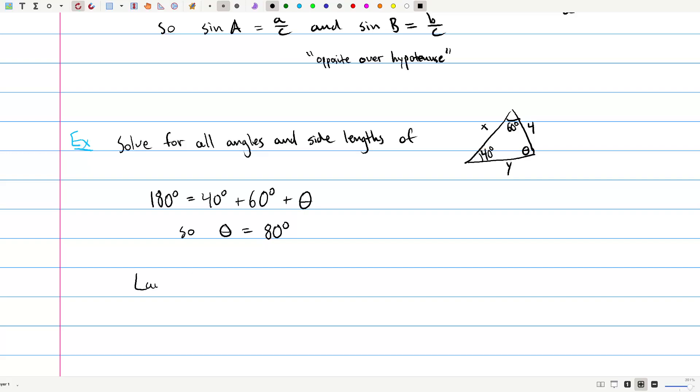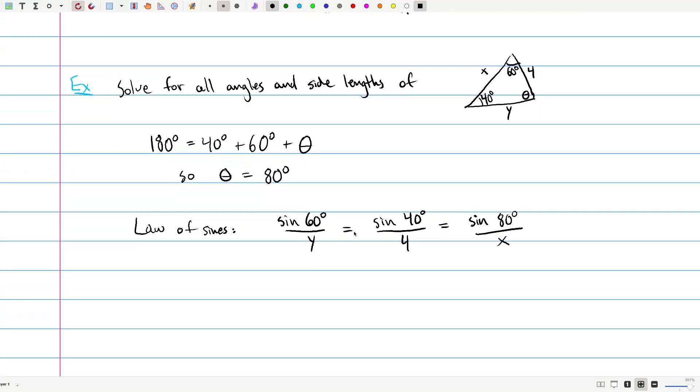And then using the law of sines, we've got that sine of, let's just start at the top. Sine of 60 degrees over y is sine of 40 degrees over 4, which is sine of theta, which is 80 degrees over x.